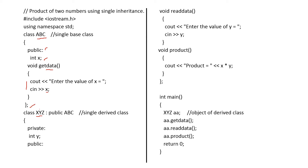XYZ is the derived class and the base class is ABC. Public is the access specifier. Y is the integer declared, and then the member function read_data gets the value of Y. There is one member function and another member function product. With the help of this product member function, X and Y are multiplied and stored in product, and that is displayed using cout.